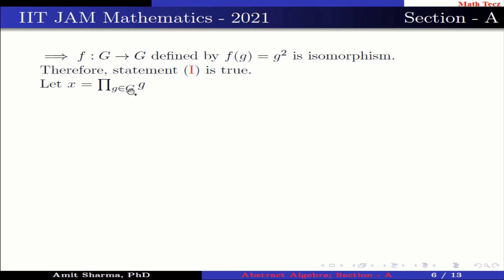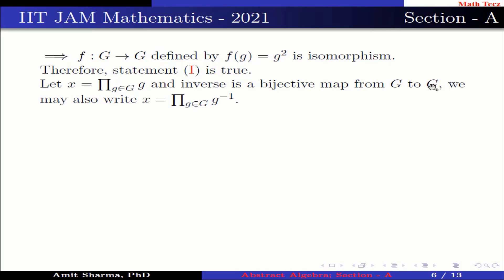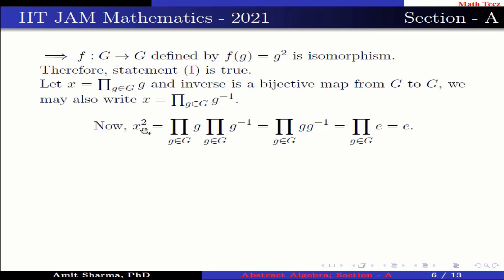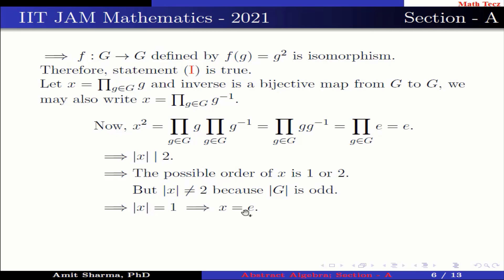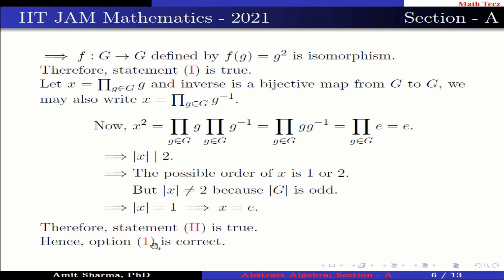Let x equal the product of all g in g. Since the inverse map is a bijection from g to g, we may also write x as the product of all g⁻¹ in g. Now x² equals the product of all g times the product of all g⁻¹, which equals the identity. This implies the order of x divides 2, so the possible order of x is 1 or 2. But the order of x cannot be 2 because the order of g is odd, so the order of x is 1, meaning x equals the identity. Therefore statement 2 is true. Hence option 1 is correct.